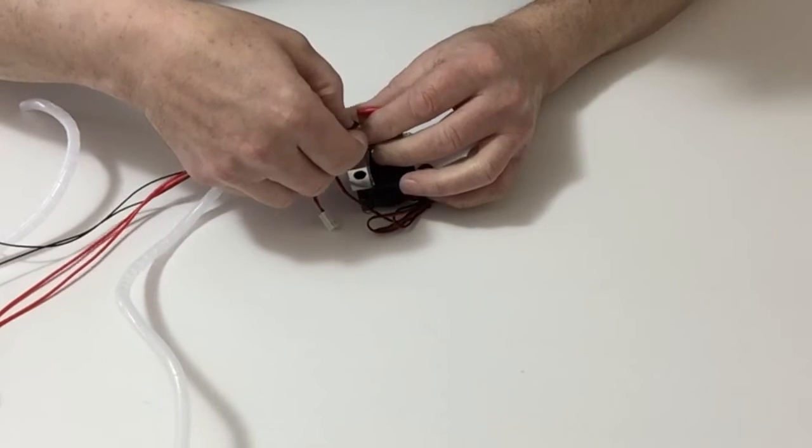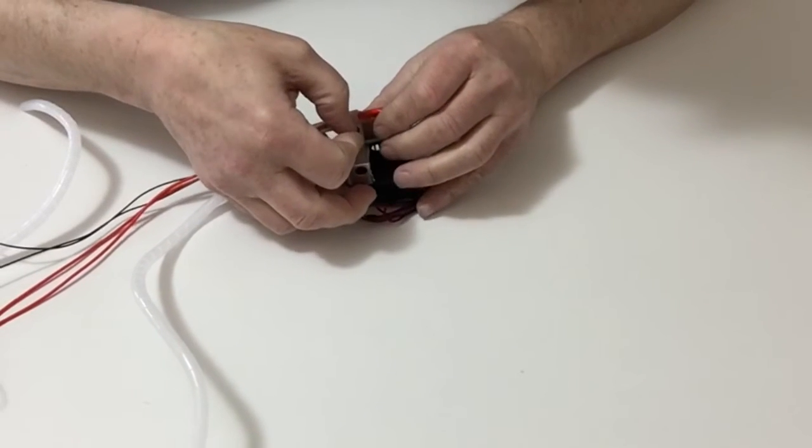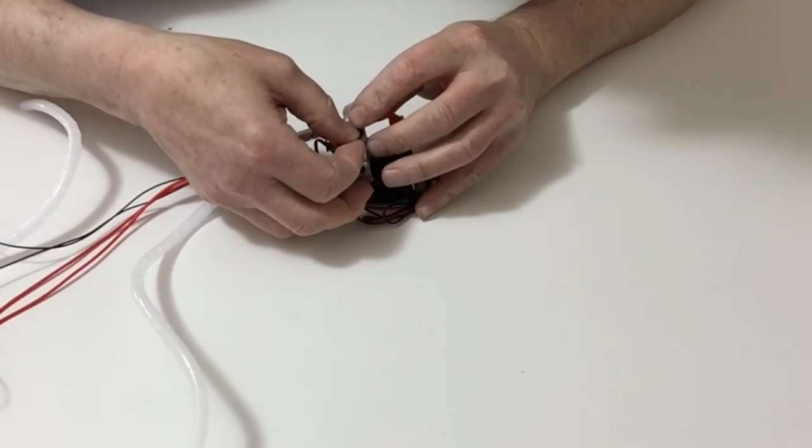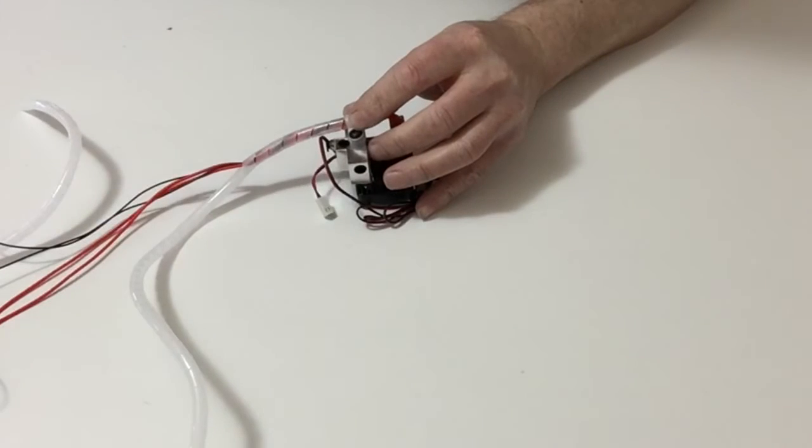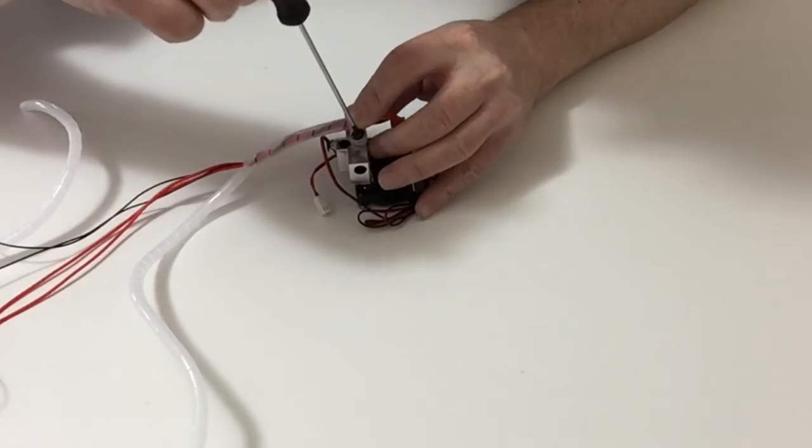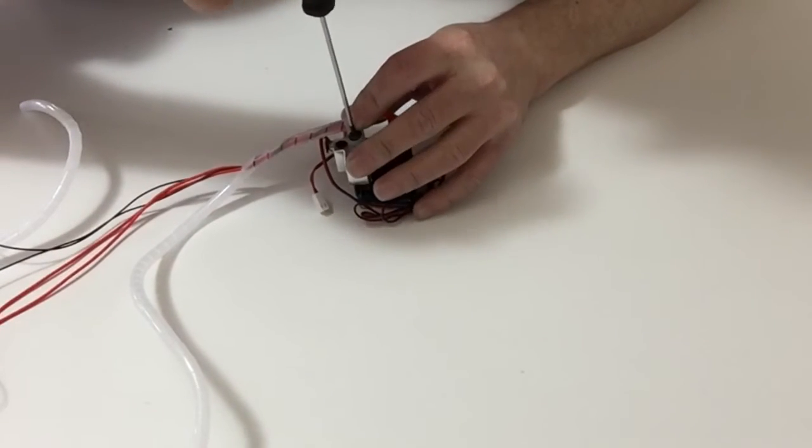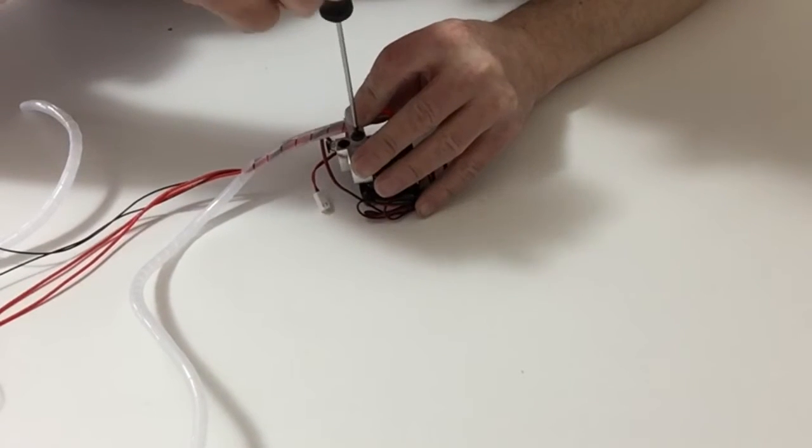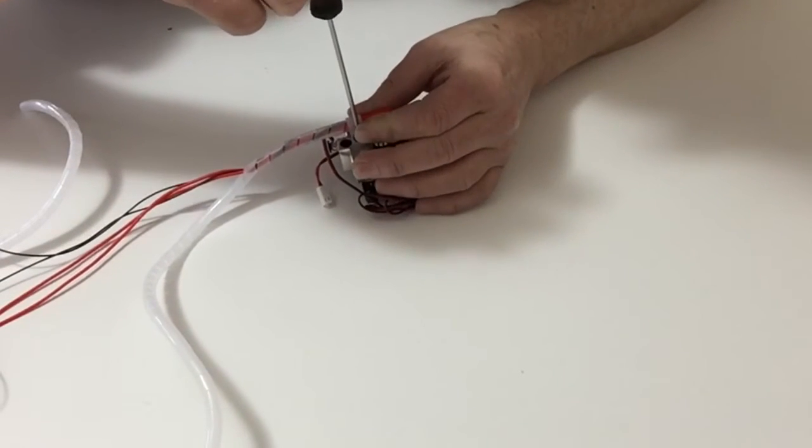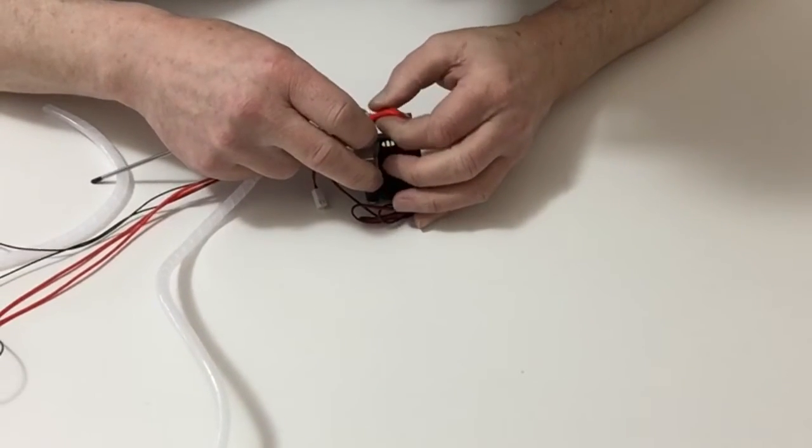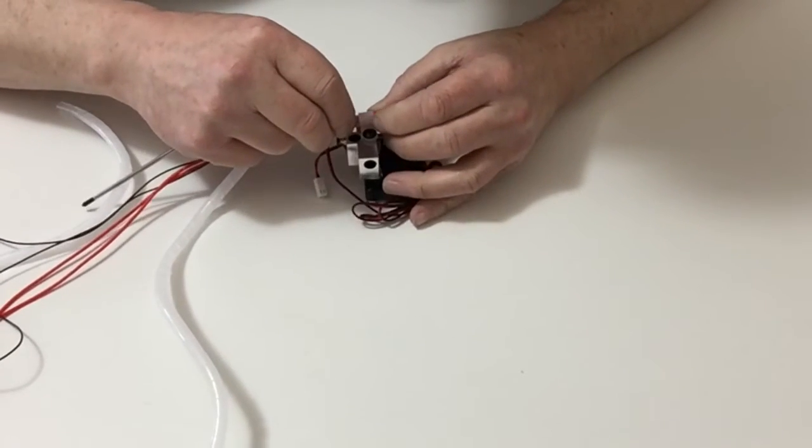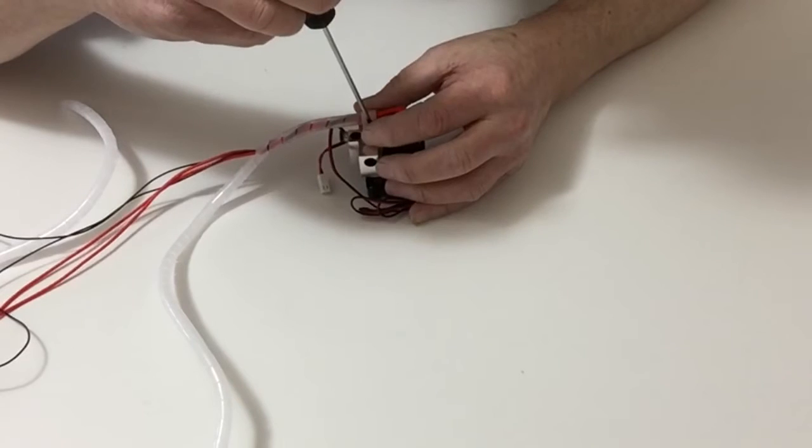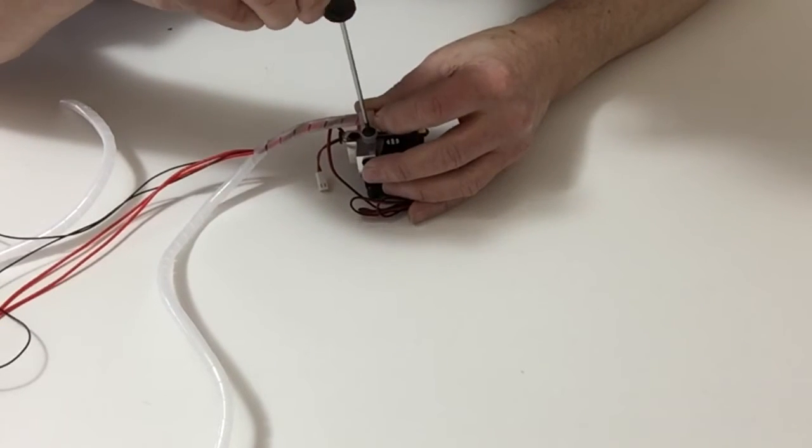Place that down and being very careful screw that down into position, making sure that it's not pulling down too tight on the end but you're clamping the cable and the cable wrap.